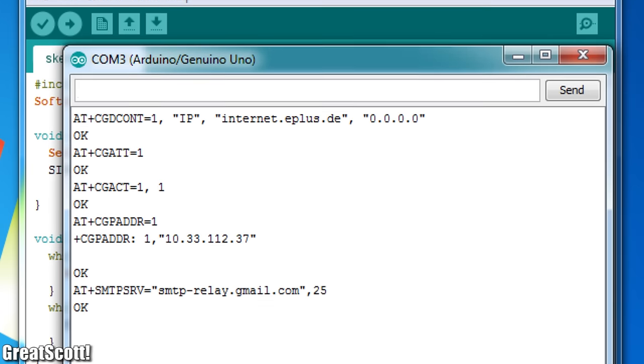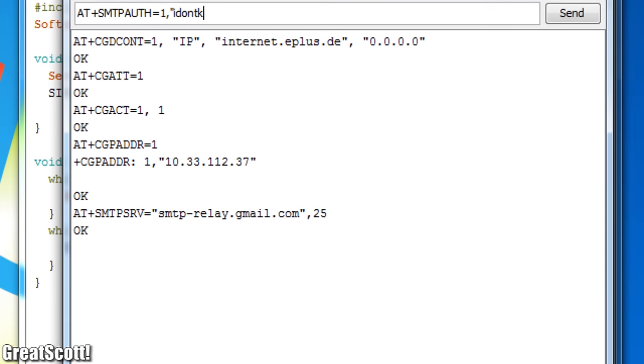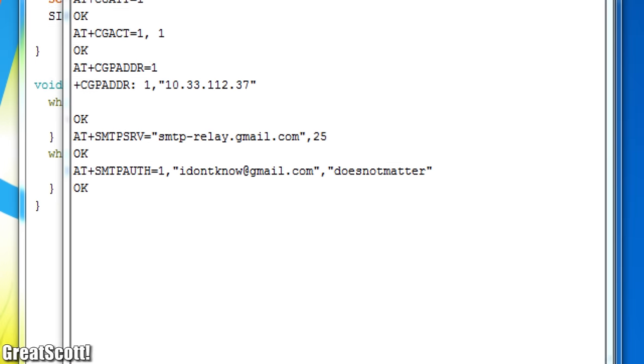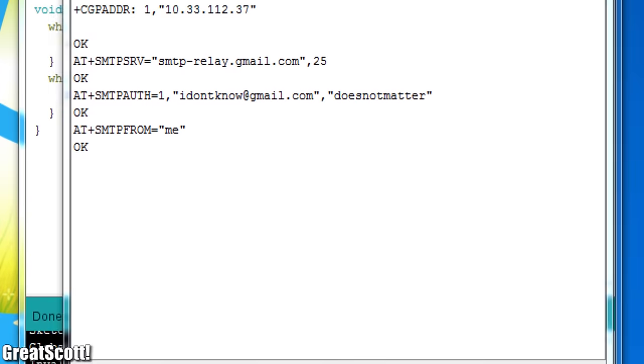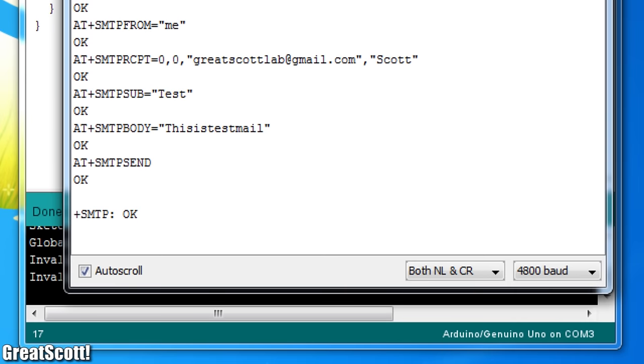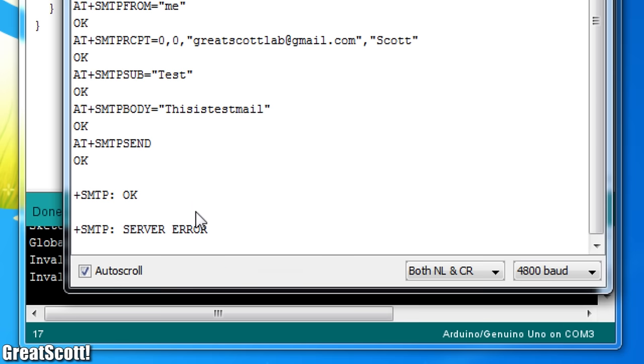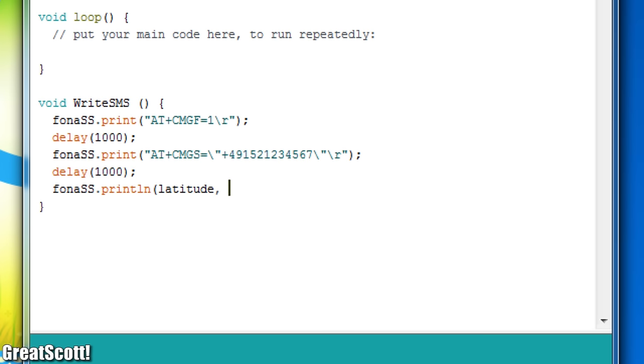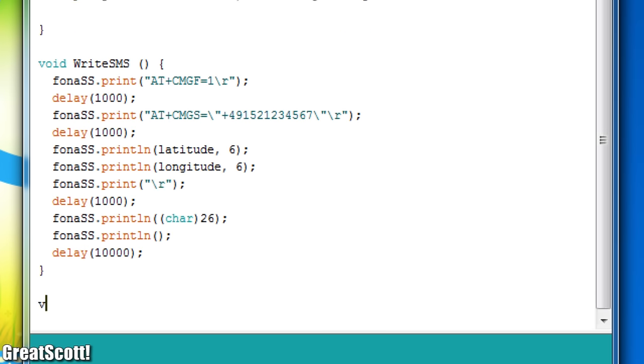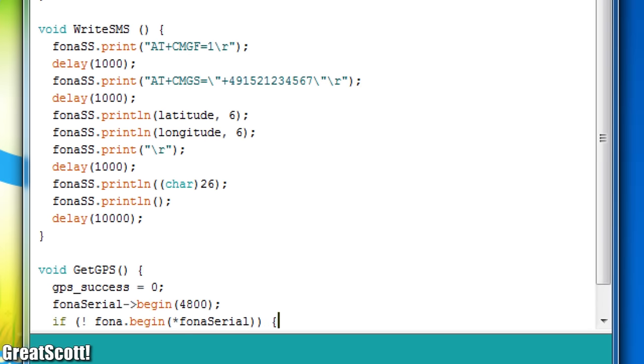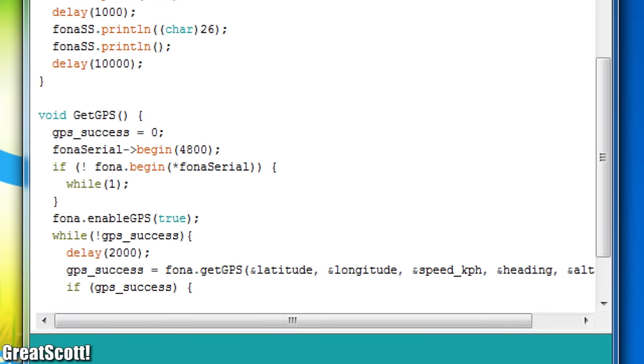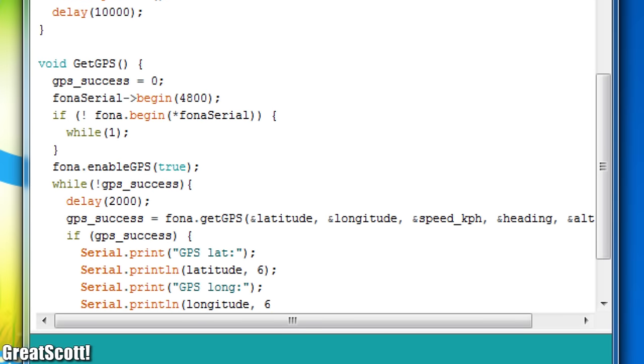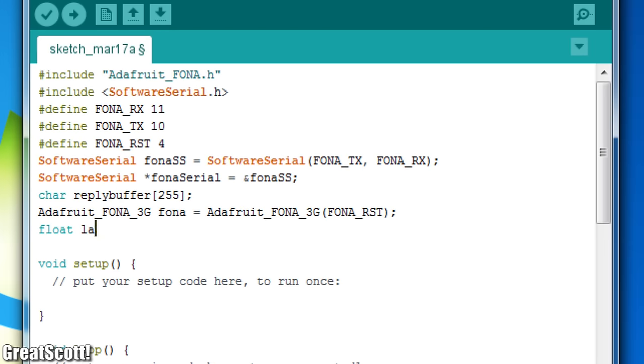Last but not least, I wanted to utilize the 3G and email capabilities of the board in order to send an email with the GPS coordinates. But no matter what I tried, there always seemed to occur a server error. So I had to scratch that idea. But nevertheless, after converting the command lines for sending an SMS and receiving the GPS data into a standalone sketch, by also utilizing a bit of the Adafruit Fona library, it was time to create a shock sensor.